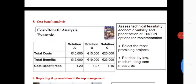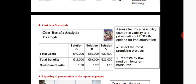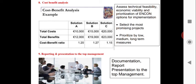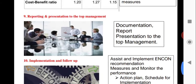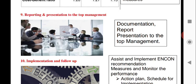Next is Cost-Benefit Analysis. You can see the Energy Conservation Opportunities cost — say 5 lakhs total cost. How many benefits could result? That could be 1 to 10 lakhs. The total cost versus benefit gives you the payback period. After cost-benefit analysis, you report to top management.